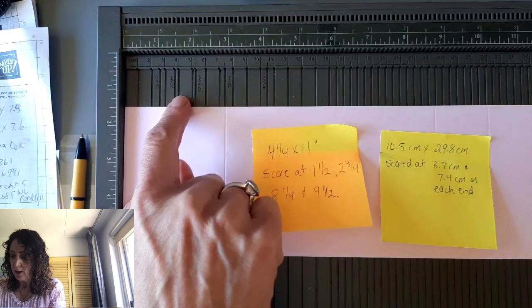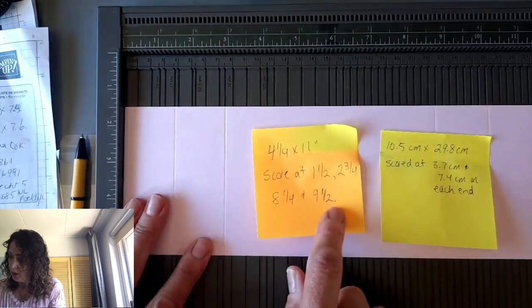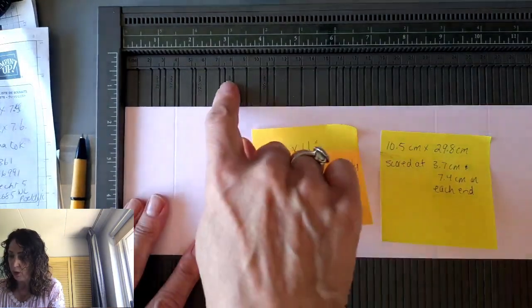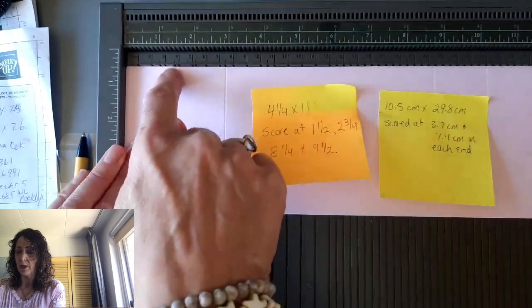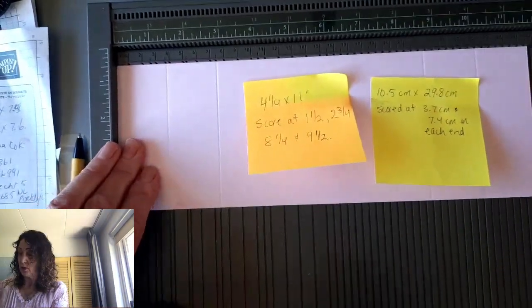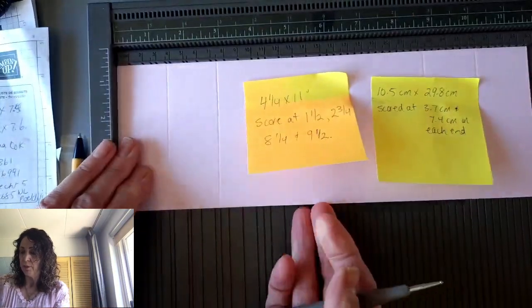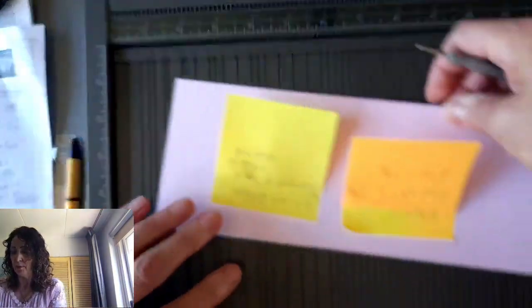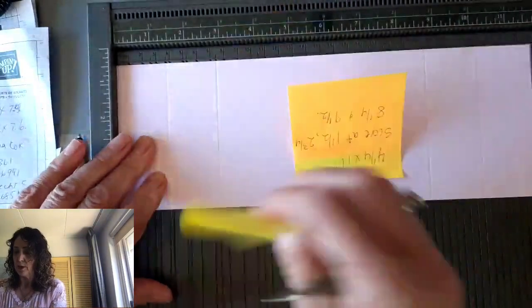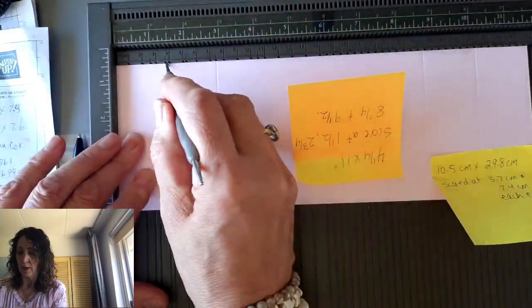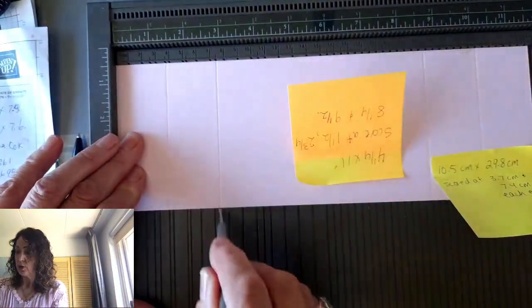And those markings were right on my paper, which was really great. So what I did was I scored and I scored. It comes with a scoring tool. So you just score once, score twice, and then flip it around. And that way you don't have to do another complicated measurement. And you do the same thing again on that side. Super easy.